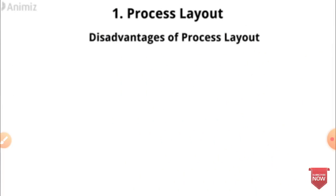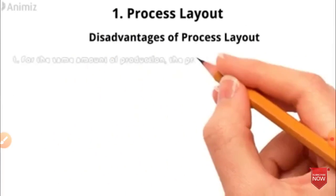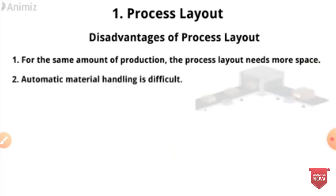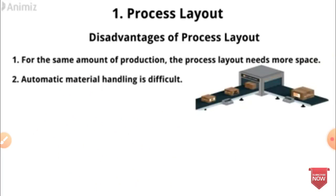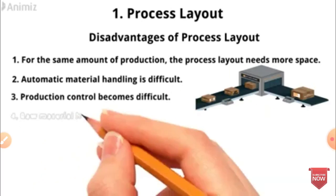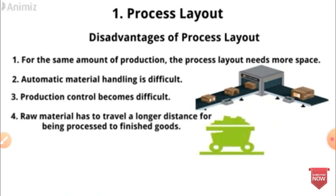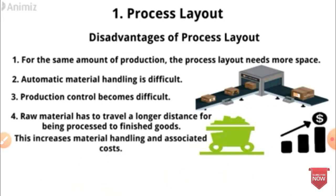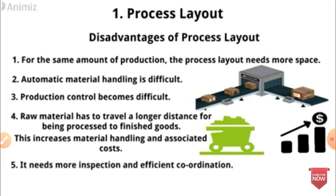Disadvantages of Process Layout: First, for the same amount of production, the process layout needs more space. Second, automatic material handling is difficult. Third, production control becomes difficult. Fourth, raw material has to travel a longer distance to be processed into finished goods, which increases material handling and associated costs. Fifth, it needs more inspection and efficient coordination.